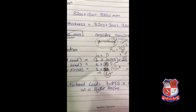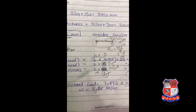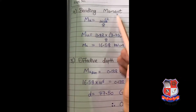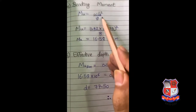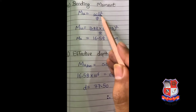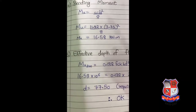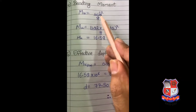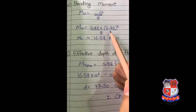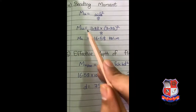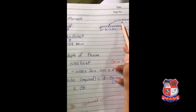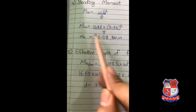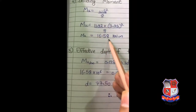Bending moment: the formula is M = wL²/8. Use the effective length LE = 3350 mm (or in meters). Substitute W = 11.82 kN/m and LE into the formula. After putting all values in, you get the factored bending moment Mu.